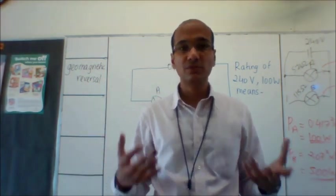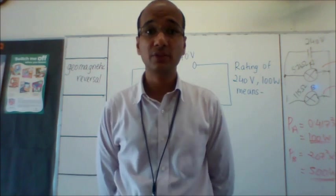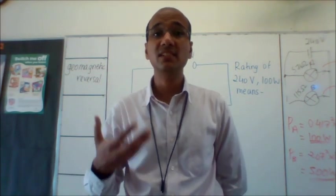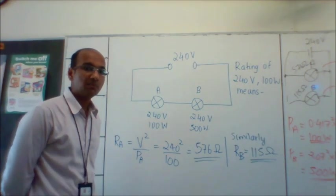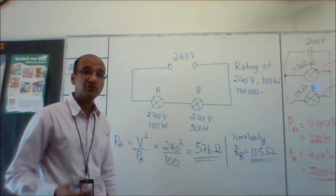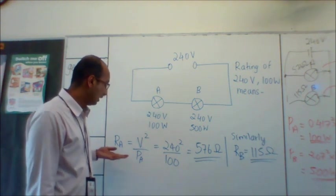So how do we make use of this rating information? We can use the rating to figure out the resistance of the bulb. Using the formula power equals V squared over R, I can say that the resistance of bulb A, R_A,